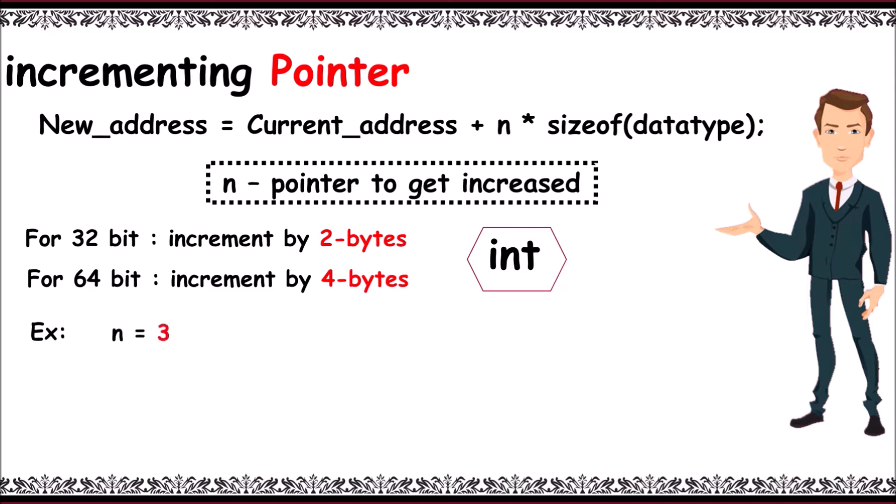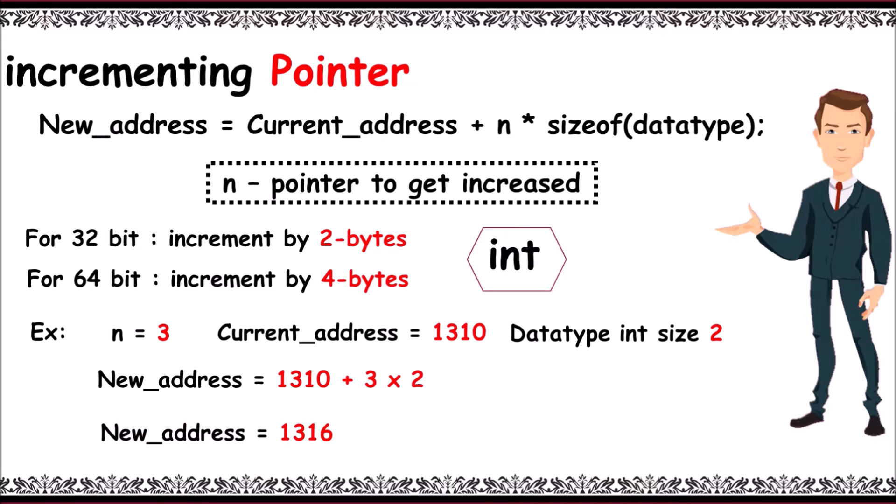For example, n equals 3, current address equals 1310, and data type size equals 2. Now new address equals current address, that is 1310, plus 3 into 2. New address equals 1316.